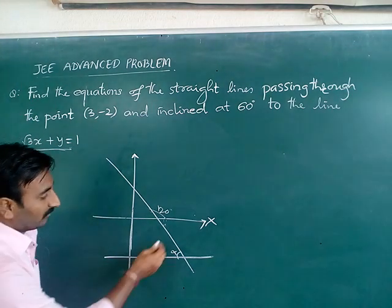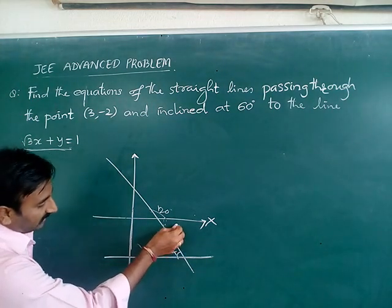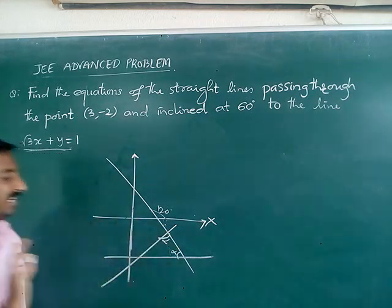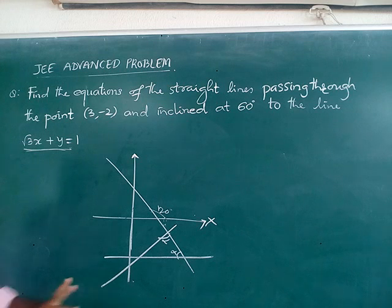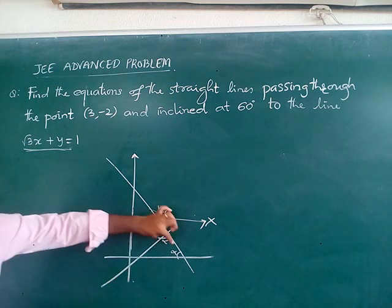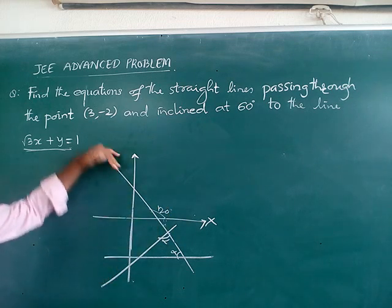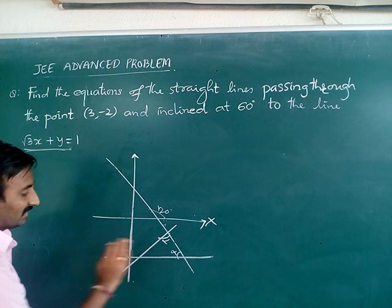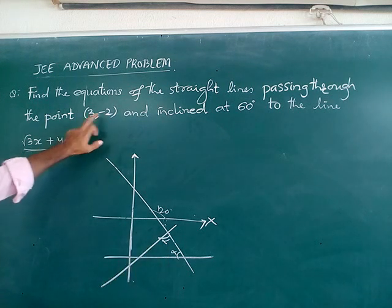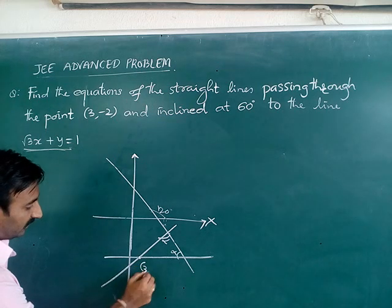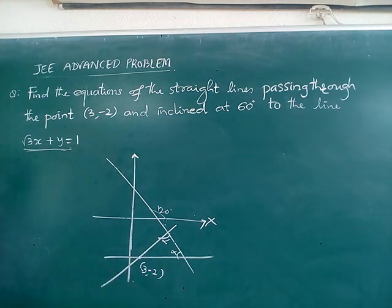And the next one more line is also making 60 degrees. There are two straight lines which we can find, those who make 60 degrees with this one, with the given line, as well as the lines are passing through the point (3, -2), where x is 3 and y is minus 2.